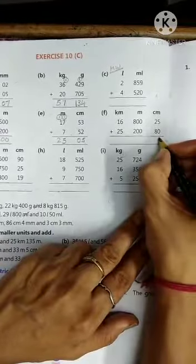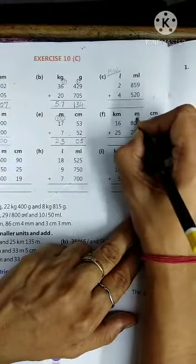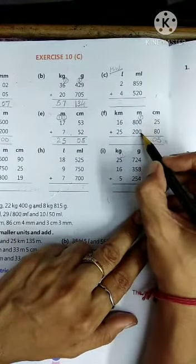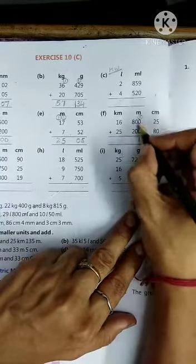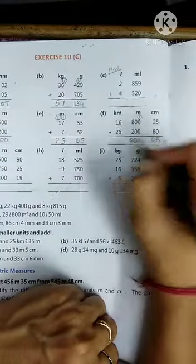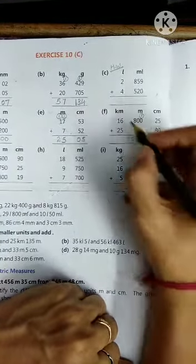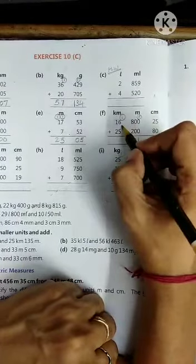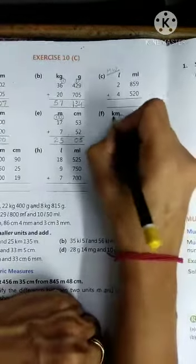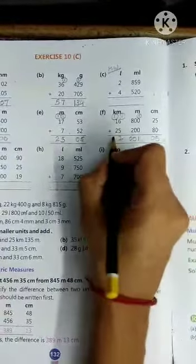5 plus 0 is 5, 2 plus 8 is 10, 0 and 1 carrying over. Clear everyone? 1 plus 0 is 1, 1 plus 0 is 1, 0 plus 0 is 0, 8 plus 2 is 10, 0 and 1 carrying over. 1 plus 6 is 7, 7 plus 2 is 12, 2 and 1 carrying over. 1 plus 1 is 2, 2 plus 2 is 4.